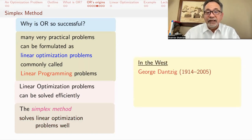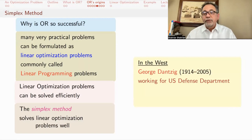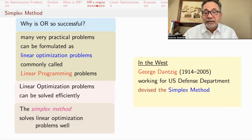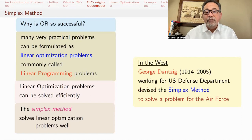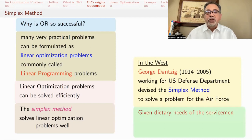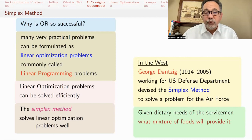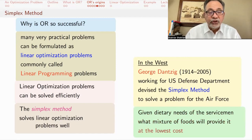In the West, George Dantzig was a crucial figure. Working for U.S. Defense Department, he devised the simplex method to solve a problem for the Air Force. George Dantzig was at U.S. Defense Department, then later went to RAND after that to Berkeley, and finally spent most of his career at Stanford. The problem that he was trying to solve was, given dietary needs of the servicemen, the people in the Air Force, what mixture of foods will provide it at the lowest cost? You want to feed the servicemen nutritious food, but you don't want to pay too much for it. And he came up with the simplex method.